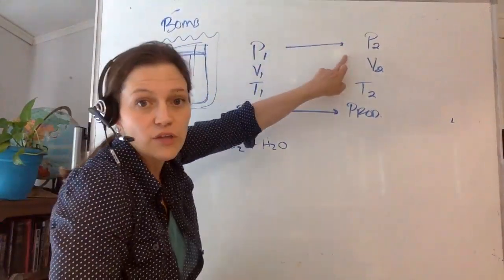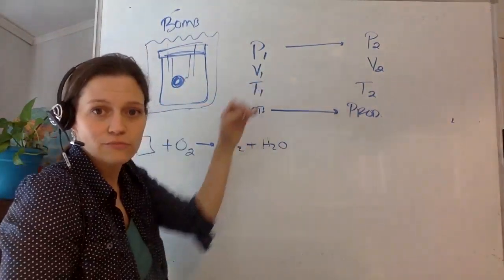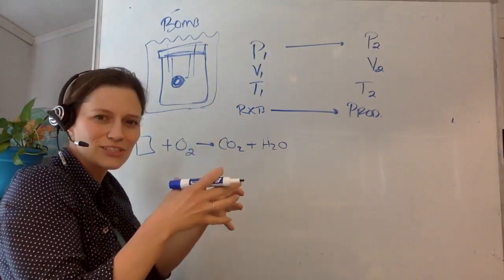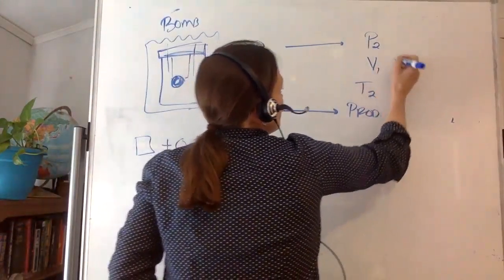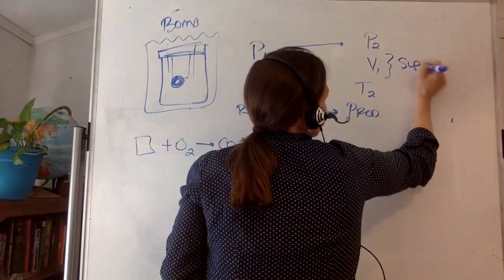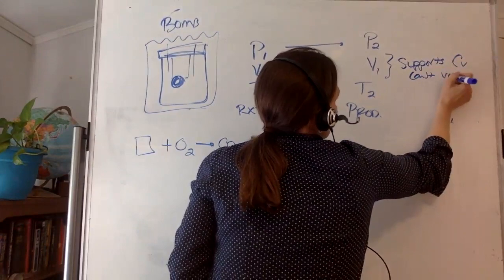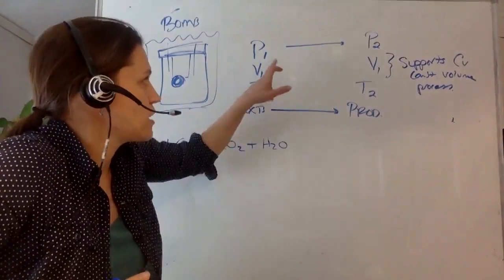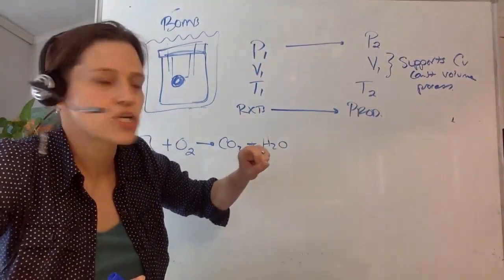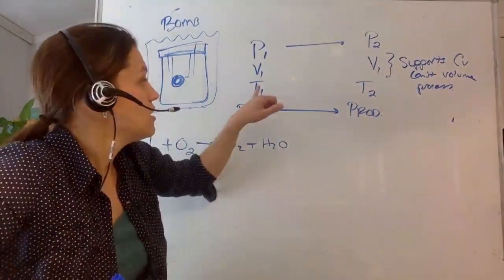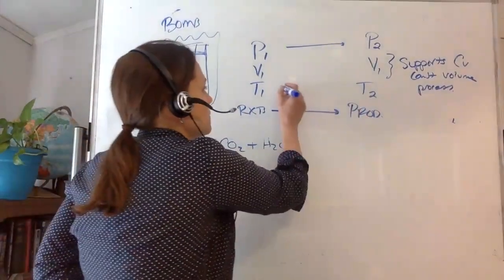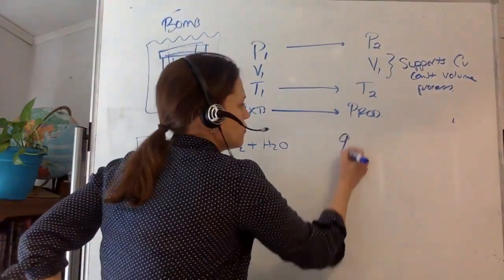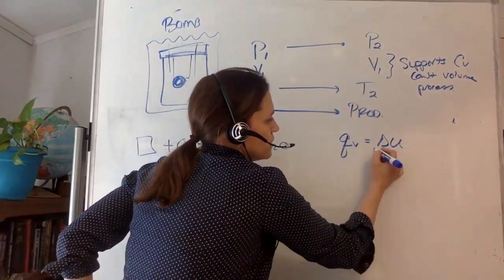So we're going from reactants to products. P₁ and P₂ are going to change. What about volume? Stainless steel, very large, heavy bomb — do you think the volume changes? No. So this one is going to be the same, and so this supports Cv — which is a constant volume process. So there's heat exchanged when the pressure changes, heat exchanged when the volume changes, but the volume doesn't change. There's also heat that's exchanged when the temperature changes.